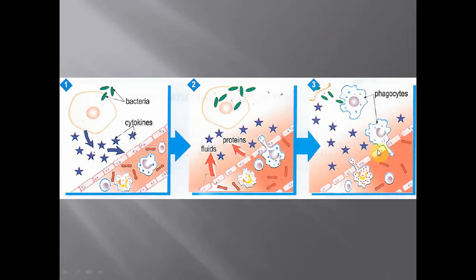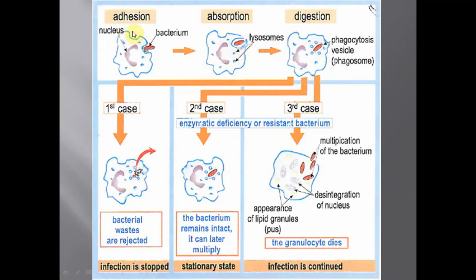So what happens next? Whenever the phagocyte moves towards the infected cell and approaches it, the process of phagocytosis begins. First is adhesion — the phagocyte adheres to the bacterium, comes closer to it, and then engulfs and absorbs it inside. This is followed by the action of lysozymes inside the cytoplasm of the phagocyte, which contain enzymes to destroy this vesicle formed during phagocytosis.